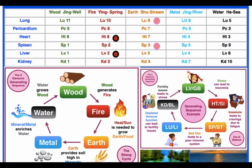Lung 9 tonifies the lung Qi. So to say that again: the mother element of metal is earth, so we use the earth point of metal, which is Lung 9, or we use the mother point on the mother meridian — spleen, which is Spleen 3. If you do both Lung 9 and Spleen 3 together, you double your chance of a better outcome and tonify the immune system. That's using the five Shu transporting points for treatment — very, very useful in clinical practice.